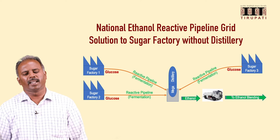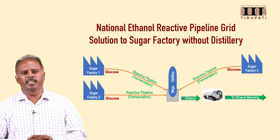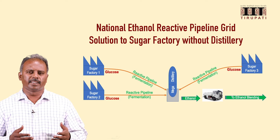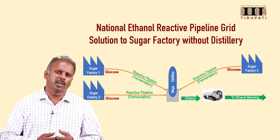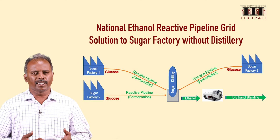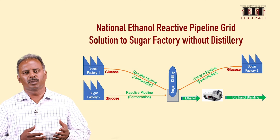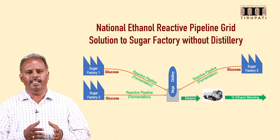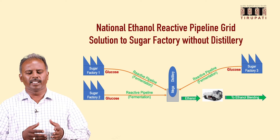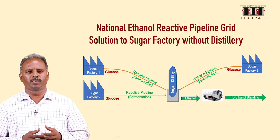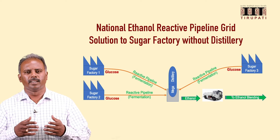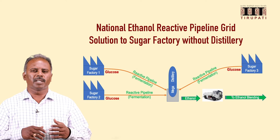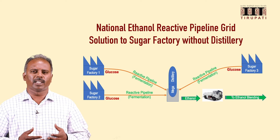There was a spark of an idea: the National Ethanol Reactive Pipeline Grid. The concept is that glucose produced in sugar factories without a distillery can be supplied through a pipeline to a mega distillery centered at a hub, thereby reducing the transportation cost of ethanol to needed locations. This reactive pipeline grid is the concept we are proposing.